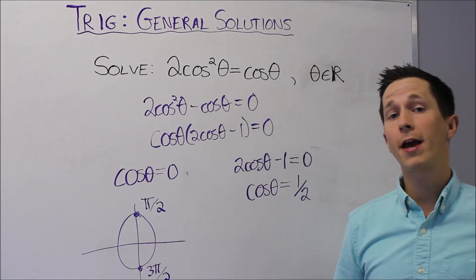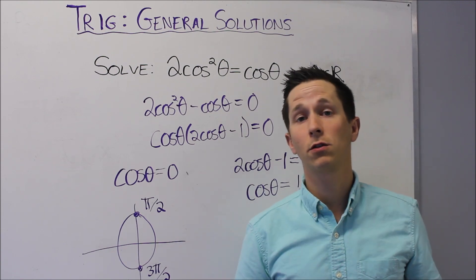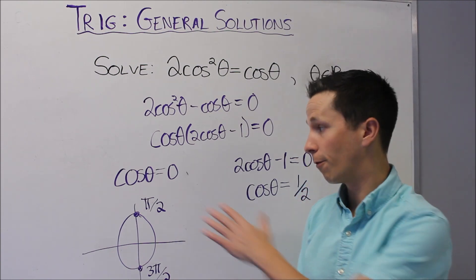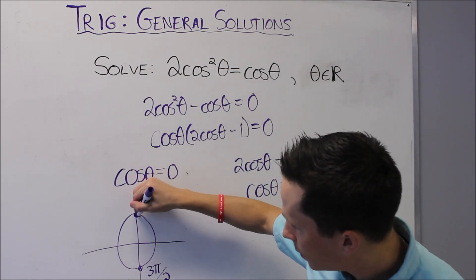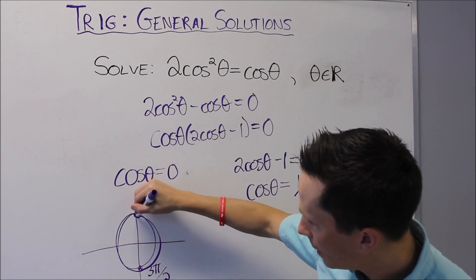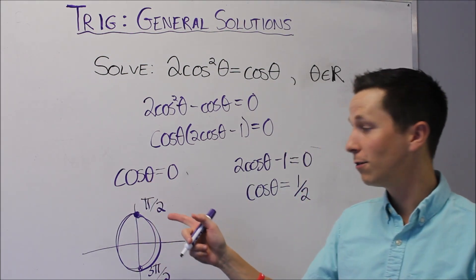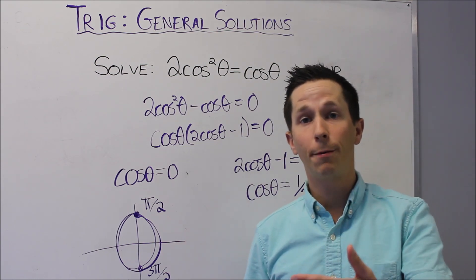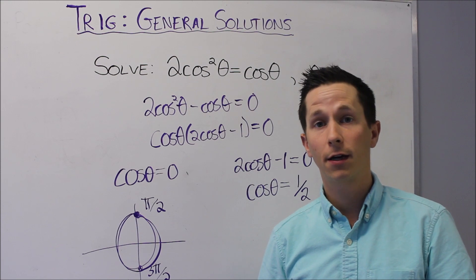So if my interval for theta was just between 0 and 2π, these would be my two solutions, and we'd be done for cos theta equals 0. However, if this is π over 2, I can go all the way around the circle, hit the same spot, and cos theta is still 0 there. How did I do that? I added 2π, added one full rotation around the circle.